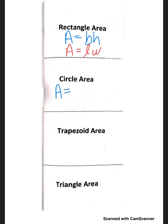For the circle: area equals pi r squared. We're going to write a couple things — that's the Greek symbol pi. We're going to do an activity involving pi and you guys are going to learn about what it means. So area equals pi r squared. Above that, write pi — it looks like a squiggly line with two lines underneath it — equals 3.14 or twenty-two over seven.